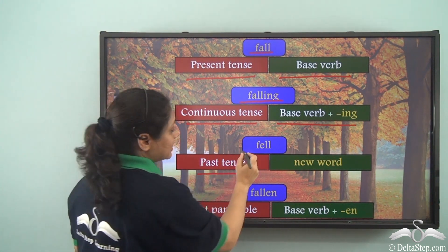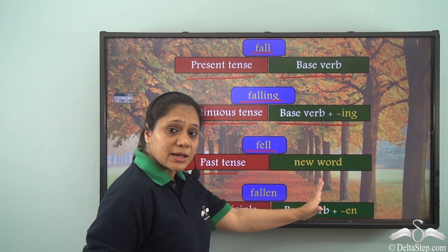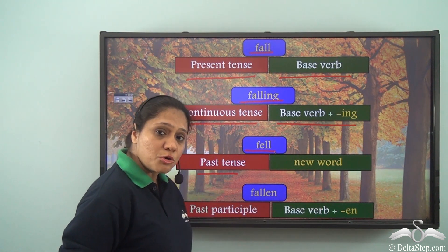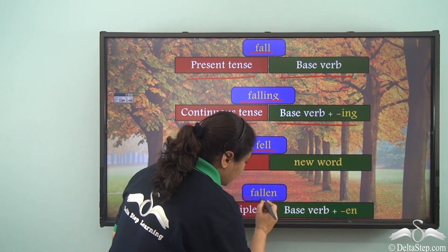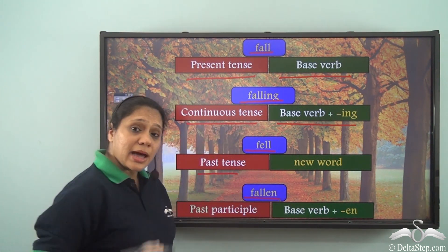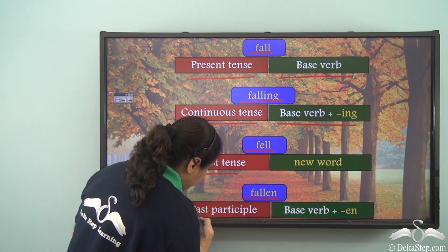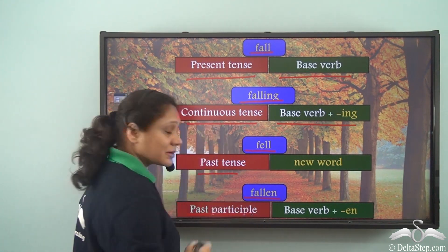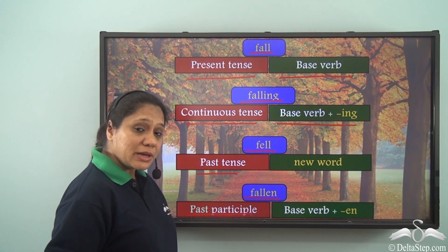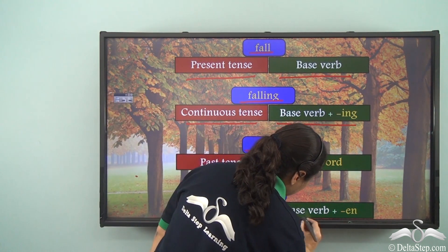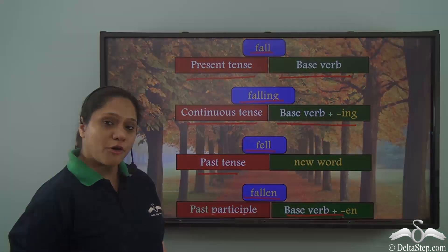In the past tense form, the verb takes the form 'fell', and we see that it is a completely new word. The past participle form is 'fallen', formed by adding '-en' to the base verb 'fall'.